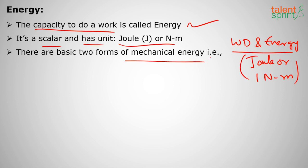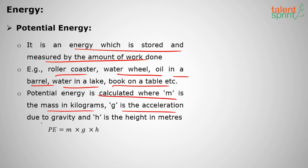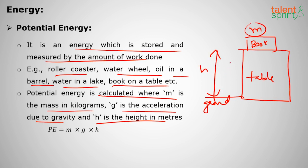There are two forms of mechanical energy: potential energy and kinetic energy. Potential energy is energy that is stored, measured by the amount of work done. Examples include a roller coaster, a water wheel, oil in a barrel, water in a lake, and a book on a table. The formula is PE = mgh, where m is mass in kilograms, g is acceleration due to gravity, and h is height in meters.